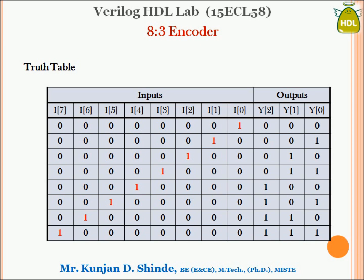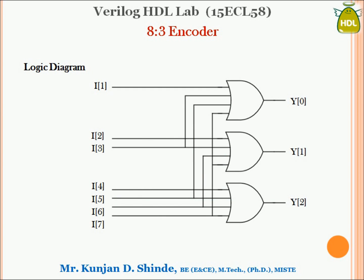To generate a logic circuit from this truth table, we consider the output equations. For Y0, grouping the 1s gives the expression I1 OR I3 OR I5 OR I7. This is a simple OR operation generating signal Y0. Similarly, for Y1 it will be I2 OR I3 OR I6 OR I7. And Y2 is obtained by I4 OR I5 OR I6 OR I7.